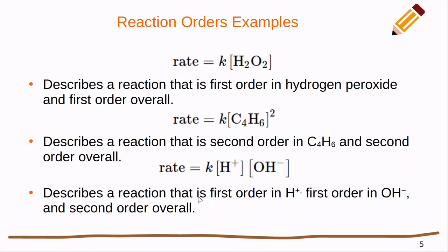If I had a rate that looked like this, this describes a reaction that is first order in H+ and first order in the hydroxide ion concentration and second order overall. So we would have one plus one is two and then we get an overall second order.